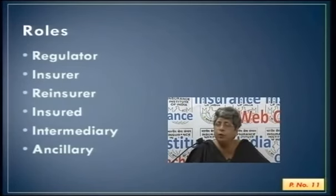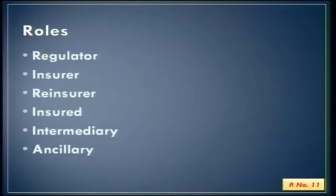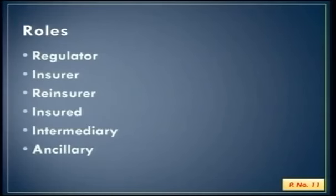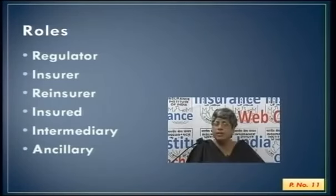Within an insurer, we have certain different roles. The first role is that of the underwriter — the person to whom the proposal form will go, who will study the proposal form, work out what factors are appropriate, what rate is to be charged, and what terms under which the policy will be issued. Policies may have standard wordings, but some additional risks may be required to be covered. Once the underwriter accepts, the policy document is prepared, the normal process follows, and the risk has started.